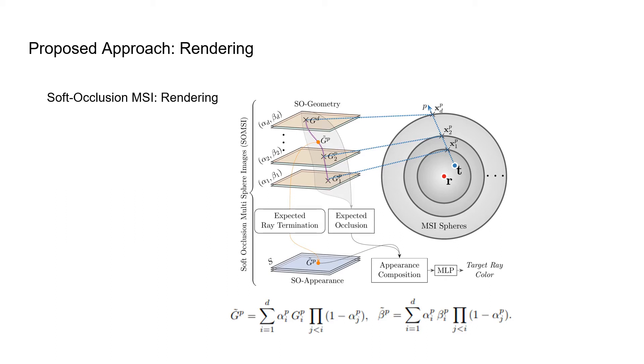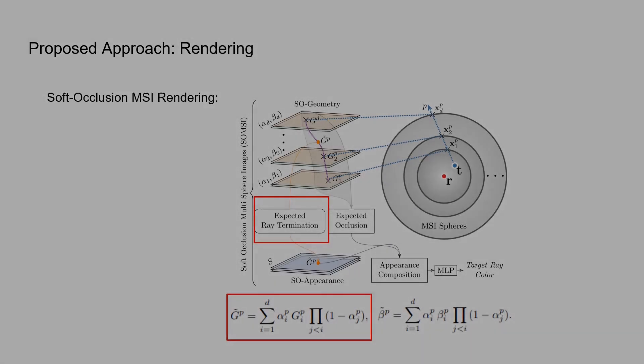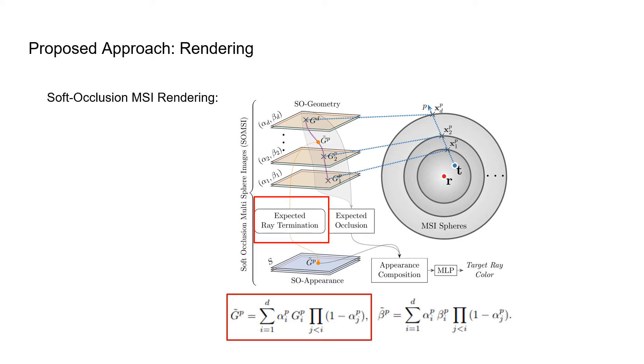Given a soft occlusion MSI, a pixel at the target novel view can be rendered as follows. We start by casting a ray through the target pixel and recording opacities alpha, soft occlusion weights beta, and the 2D ERP locations of each ray sphere intersection point. 2D ERP locations of the ray sphere intersection points are alpha composited to compute a sampling location on the soft appearance map. Sampling the soft occlusion appearance at the UV location gives us k appearance features. Occlusion weights are alpha composited to compute the expected weighting factors for the k appearance maps. The final appearance feature is computed by combining the k soft occlusion appearance features using the expected occlusion weights. In cases when the dimensionality of aggregated feature vector is greater than 3, an MLP network is used to project the feature vector into the RGB color space.